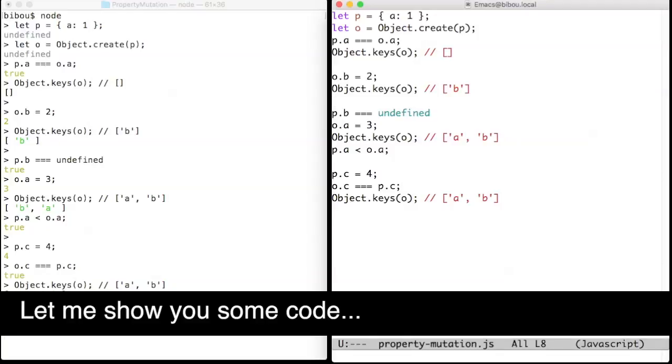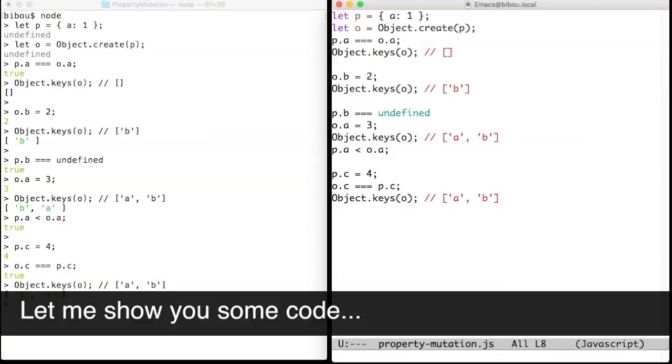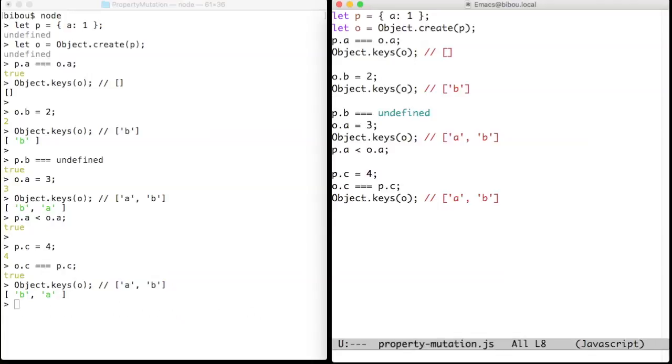Hi, let me show you some code. Modifying the value of a property or creating a new property is done in the object itself. This is a sort of copy-on-write. This ensures that the objects will see the modified values while other objects sharing a prototype will not be altered.